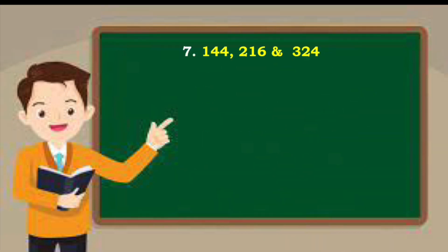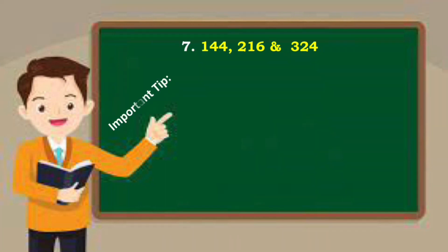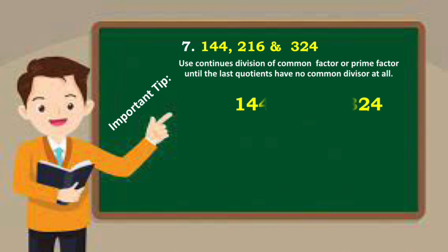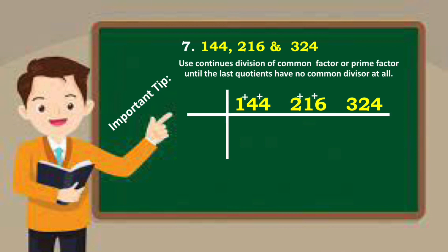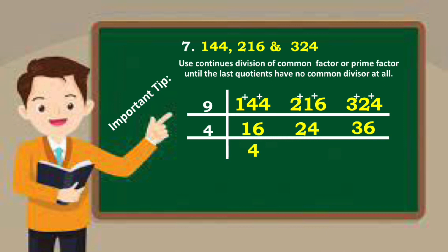Last item: 144, 216, and 324. Important tip — use continuous division. If you add the digits of each number, the answer is 9. So all numbers are divisible by 9. 144 divided by 9 is 16; 216 divided by 9 is 24; 324 divided by 9 is 36. Now 16, 24, and 36 are multiples of 4, so divide them by 4: 16÷4=4, 24÷4=6, 36÷4=9. The last quotients have no common factor. Get all the divisors and multiply. Therefore, the GCF is 36.